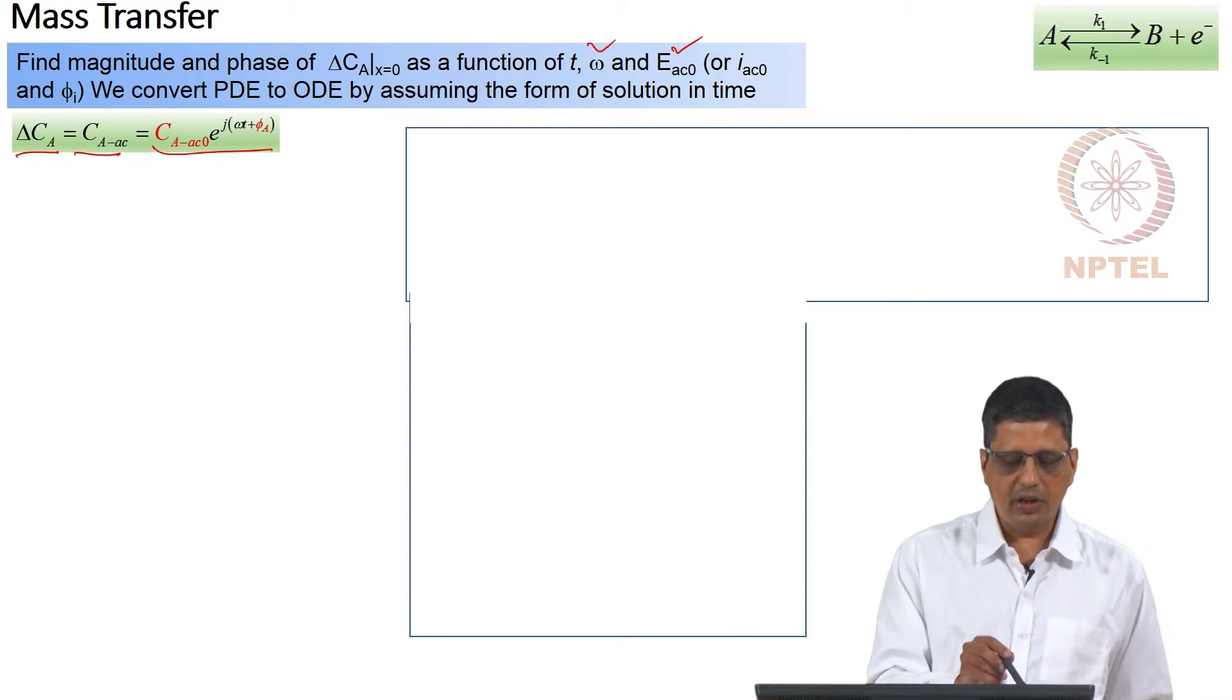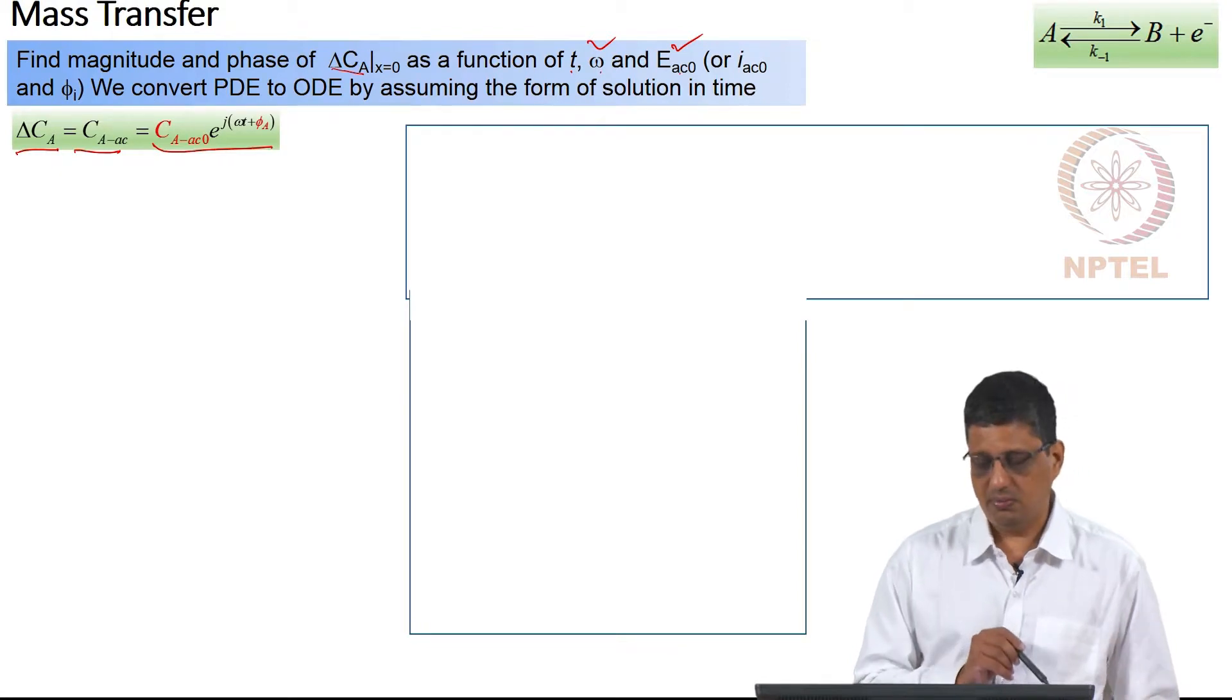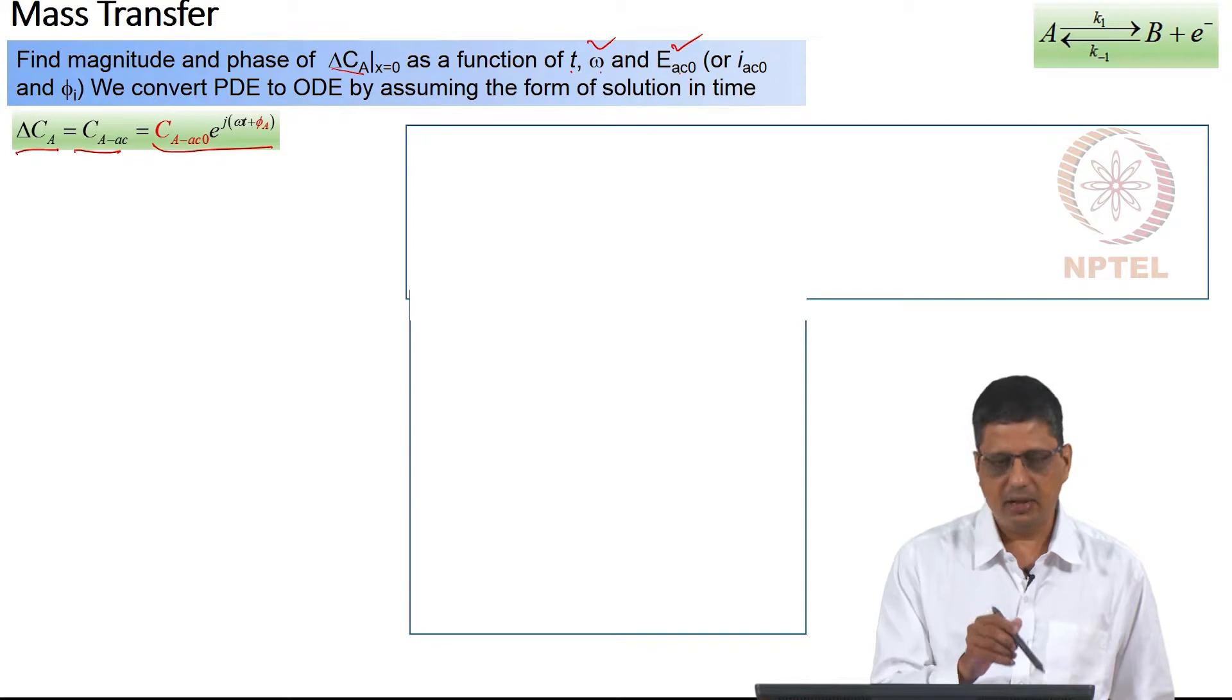So, the derivation is little different than what we have seen before. That is why I write we want to find the magnitude and phase of del C_A at x=0 as a function of t, omega and E_AC_0 or it can be a function of I_AC_0. And φ_i, φ_i here meaning phase of the current. I_AC_0 and φ_i is actually going to be equal to I_AC.